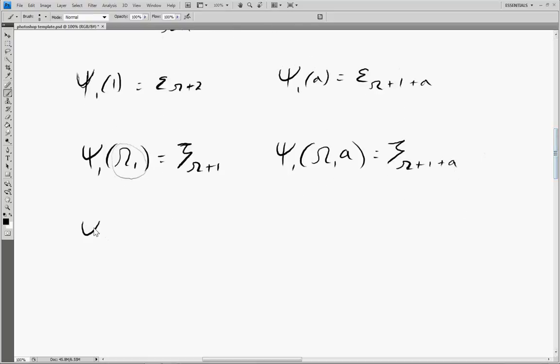Another point of interest would be psi 1 omega 1 squared is equal to the first eta naught after omega. Psi 1 omega 1 of a would be phi a plus 1 of omega plus 1.